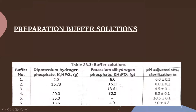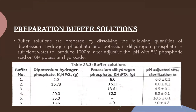The second reagent required is buffer solution. Buffer is required to maintain the pH of the medium. This buffer can be produced by dissolving dipotassium hydrogen phosphate and potassium dihydrogen phosphate in sufficient water, and adjusting the volume with 8 molar phosphoric acid or 10 molar sodium hydroxide. Depending on the buffer specified in the IP, you can select any buffer.